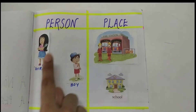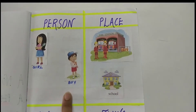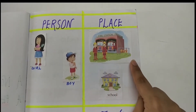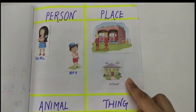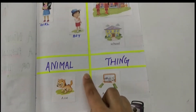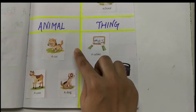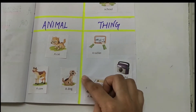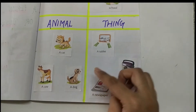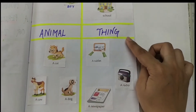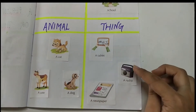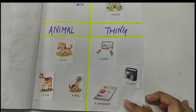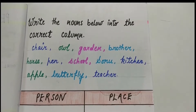Let's go through some examples. Person: girl, boy. Place: fire station and school. Animal: a dog, a cow. Thing: a tablet, a radio, and a newspaper.